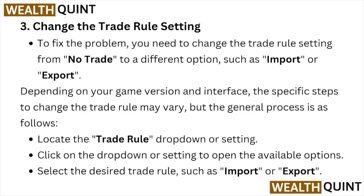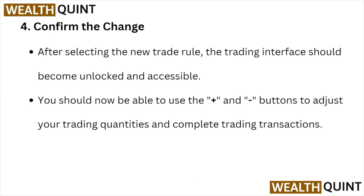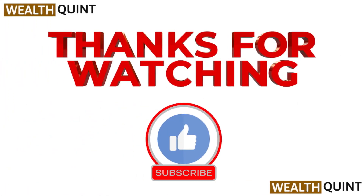Select the desired trade rule, such as Import or Export. The fourth step is to confirm the changes. After selecting the new trade rule, the trading interface should become unlocked and accessible. You should now be able to use the plus and minus buttons to adjust your trading quantities and complete trading transactions.